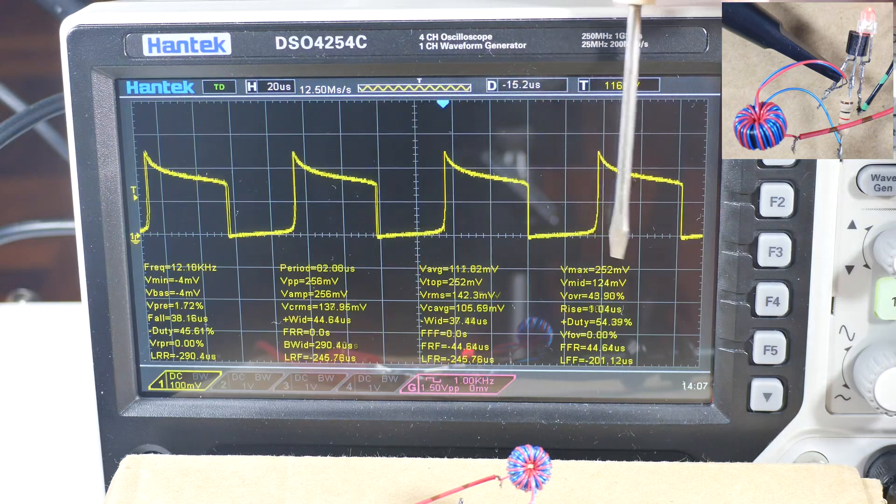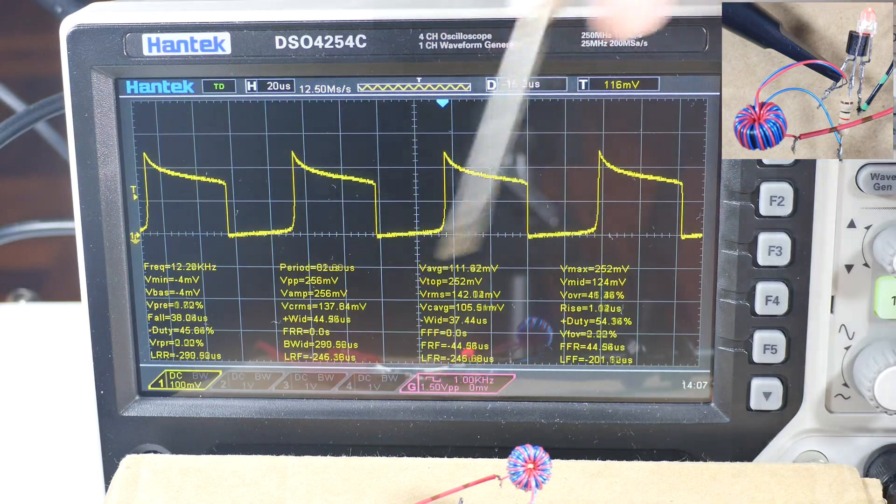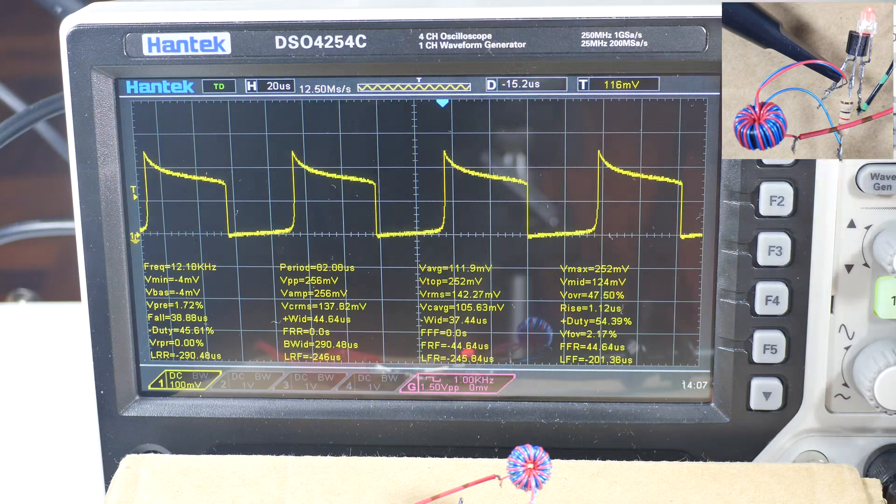What else is interesting? Peak to peak is 256 millivolts. The average is 111 millivolts. V max, okay, so you can look at these others, but those are the most interesting things.